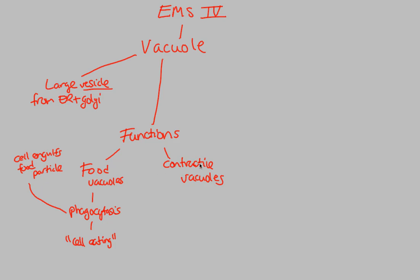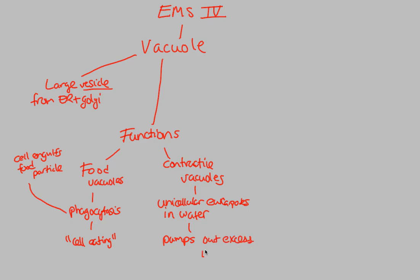Contractile vacuoles are a little bit different. These are vacuoles used in usually unicellular eukaryotes, which are often found in water. What they do is use the contractile vacuoles to contract and pump out excess water (H₂O).